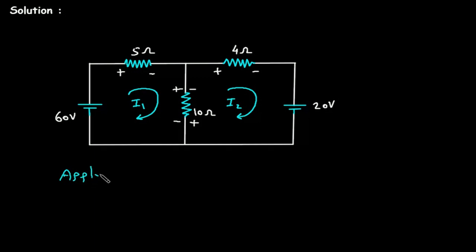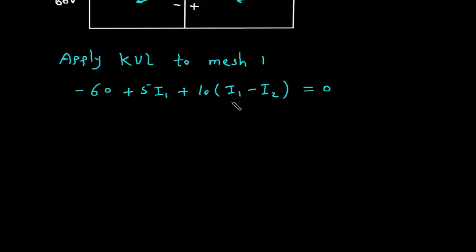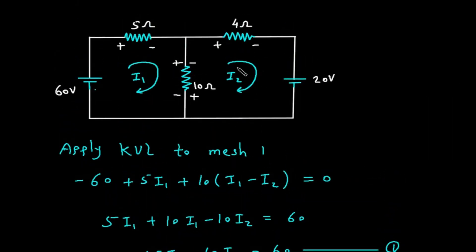Now we will apply KVL, that is Kirchhoff's Voltage Law, to mesh number 1. Starting here, this voltage source is negative, so minus 60, then plus 5I1, then plus 10(I1 minus I2) equals 0. Simplifying: 5I1 plus 10I1 minus 10I2 equals 60, giving us 15I1 minus 10I2 equals 60. This is equation number 1.